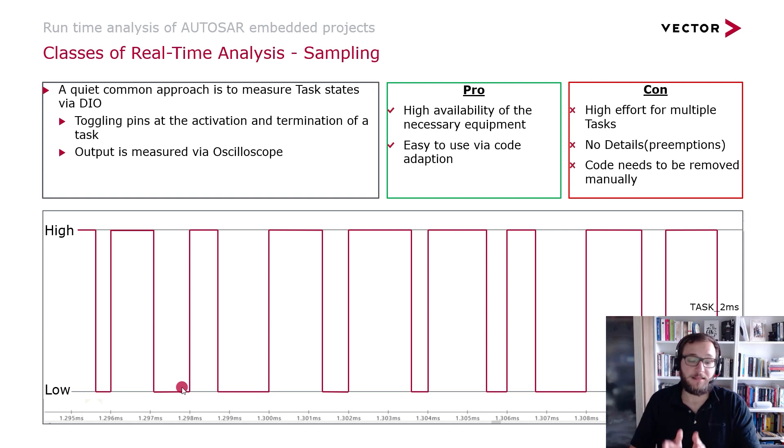Then the next downside of this approach is you don't get the details. You can see that your task is getting activated and you can see when your task is getting preempted again, but you're not able to see what's happening in between these two points. You will not be able to see if your task is getting preempted all the time and it actually had a very short runtime but was spending most of the time in preemption. Or you will also not be able to see how long was the time from the activation of the task until it actually got to run on the core.